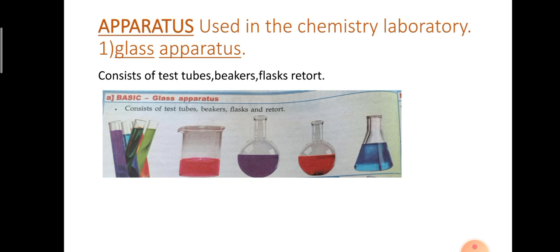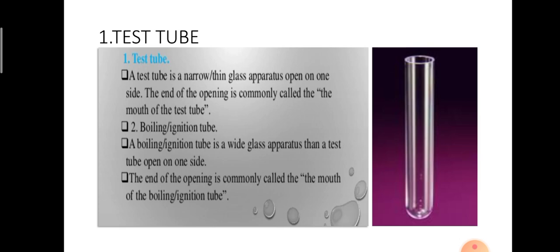The first picture indicates the test tube. Second picture indicates the beaker. Third, fourth and fifth indicate the flasks. A test tube is a special glass with one open end. One end is open and one end is closed below — we call it a short test tube. Test tubes vary in size: 1 ml, 2 ml, 5 ml or 10 ml. The second type is a hard glass test tube made up of fire glass, called a boiling tube. A test tube is also called a boiling tube.